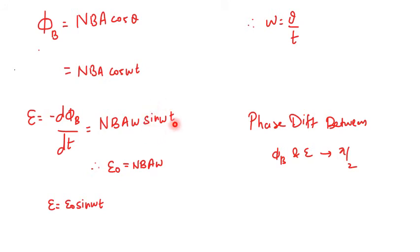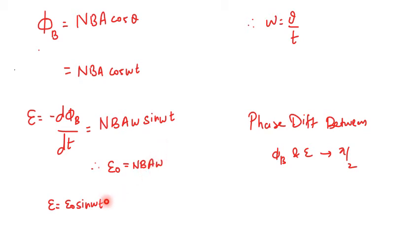The value of EMF will be maximum when sin(theta) is maximum, and the maximum value of sine is 1. So the maximum EMF is NBA·omega. If someone asks what the maximum EMF that can be generated by a coil is, it's NBA·omega, where N is the number of turns, B is the magnetic field, A is the area, and omega is the angular velocity. We can also write the induced EMF as E = E₀·sin(omega·t).